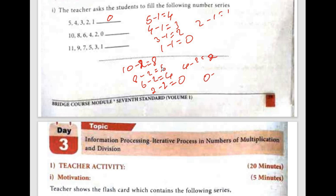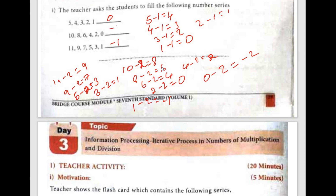Continuing the series: 2 minus 2 is 0, and 0 minus 2 is minus 2. For the series 11, 9, 7, 5, 3, 1: 11 minus 2 is 9, 9 minus 2 is 7, 7 minus 2 is 5, 5 minus 2 is 3, 3 minus 2 is 1, and 1 minus 2 is minus 1. That is the answer.